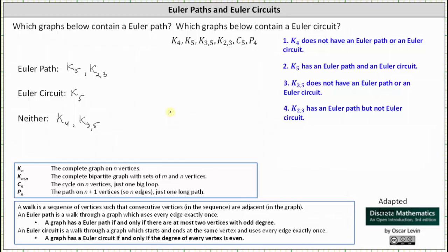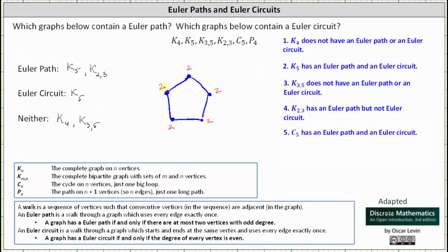Next, we have the graph C₅, which is the cycle on five vertices — just one big loop. Without even determining the degrees, we can easily recognize that it is possible to walk through the graph and use every edge exactly once, and also to start and end at the same vertex. If we do check the degrees, all vertices have degree two, which are all even. This indicates C₅ has an Euler path and an Euler circuit. We list C₅ under both Euler path and Euler circuit.